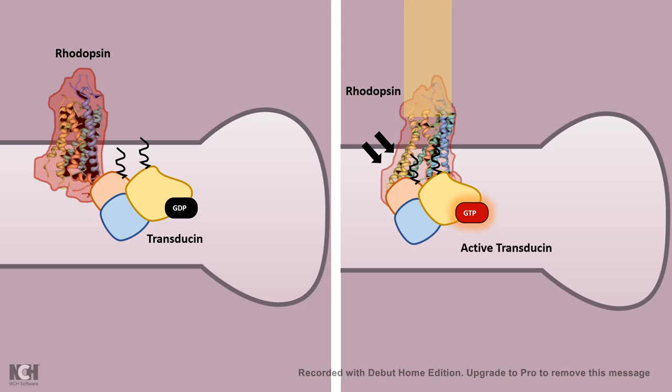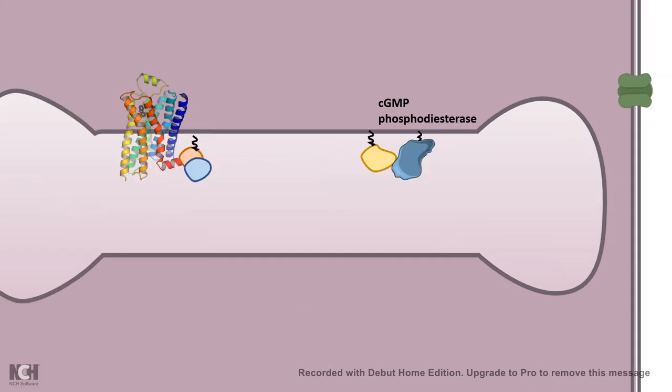Once in a GTP-bound state, transducin is active. The active transducin leaves the trimeric state and activates another phosphodiesterase molecule, a particular enzyme which converts cyclic guanosine monophosphate into only GMP. What is the consequence of that and what type of relation does it have with vision? We will get to know soon.